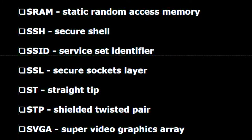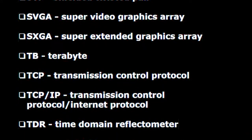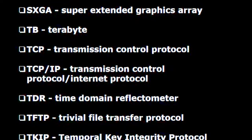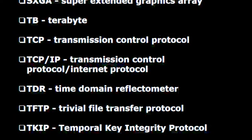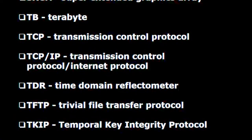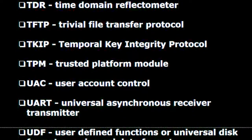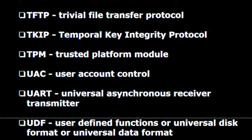S.T. — Straight tip. S.T.P. — Shielded twisted pair. S.V.G.A. — Super video graphics array. S.X.G.A. — Super extended graphics array. T.B. — Terabyte. T.C.P. — Transmission control protocol. TCP/IP — Transmission control protocol internet protocol. T.D.R. — Time domain reflectometer. T.F.T.P. — Trivial file transfer protocol. T.K.I.P. — Temporal key integrity protocol. T.P.M. — Trusted platform module.